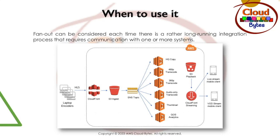I have a picture from the AWS website, and this picture tells you all about publisher-subscriber. Fanout can be considered each time there is a long-running integration required which requires a message to be transported or sent to one or more subsystems. You can see on the left side there are encoders. They are uploading information to CloudFront, which is dropped in S3, and there is a topic. Whenever an S3 file is dropped, this topic gets a message. This topic is subscribed by different lambdas — like high quality copy, 480 transcoding, 360 transcode, audio only, thumbnail creation, and QoS analytics. All these lambdas are subscribing to the same message, which is triggered based on the video file being dropped, and they can start parallel processing as soon as there's a file drop.